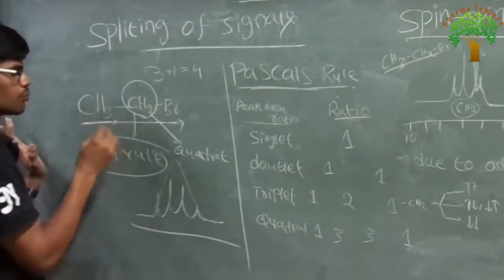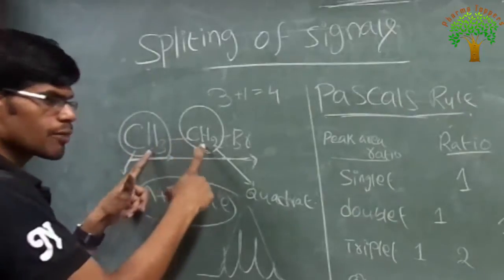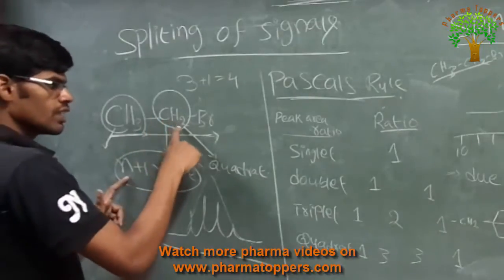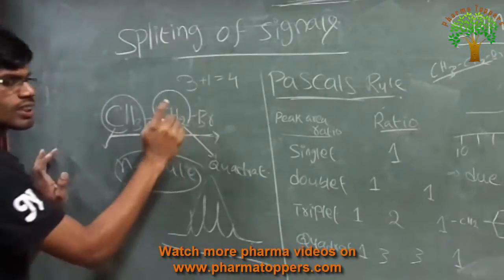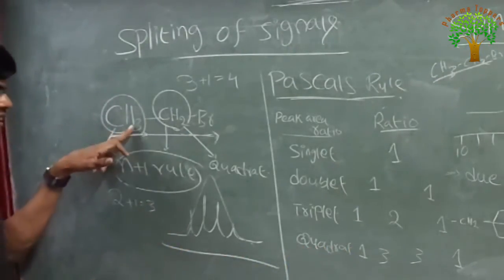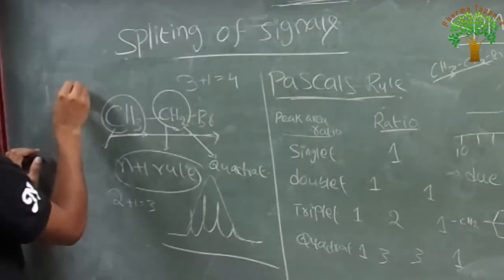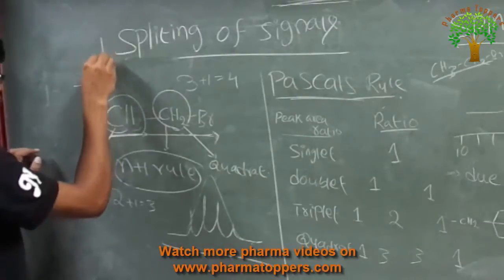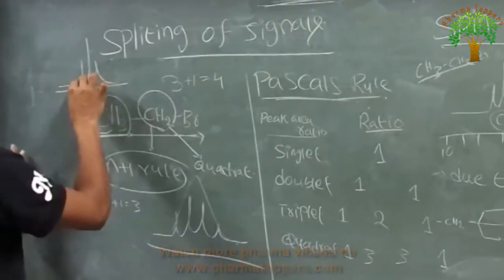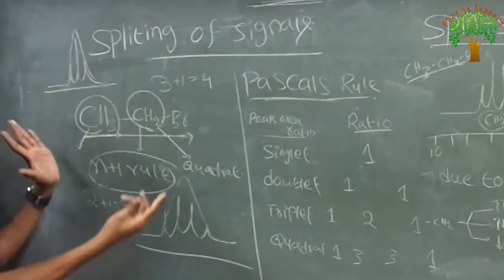Then we are going to calculate the splitting of the methyl group. So this methyl group — how many neighboring protons is there? Here, n means number of neighboring protons. Here CH2 is there, means 2 protons is there. So 2 plus 1 is equal to 3. So this CH3 will split into 3 peaks — like 1, 2, 3. So this CH3 peak will split into 3 multiple peaks.